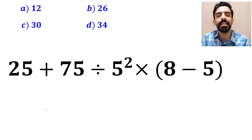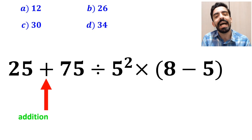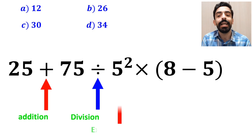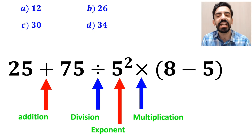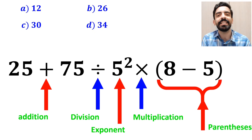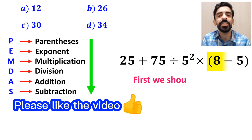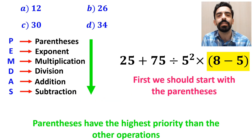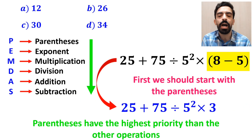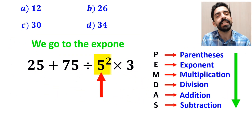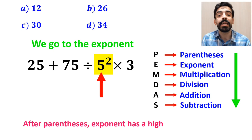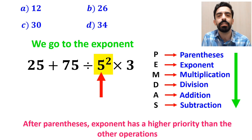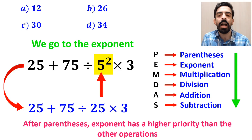As you can see on the screen, in this expression we first have an addition sign, then a division sign, then an exponent, then a multiplication, and finally parentheses. According to the PANDAS rule, first we should solve the parentheses because they have the highest priority. So we rewrite this expression as 25 plus 75 divided by 5 to the power of 2 times 3. In the next step, we go to the exponent because after parentheses, the exponent has a higher priority than the other operations. So this expression simplifies to 25 plus 75 divided by 25 multiplied by 3.